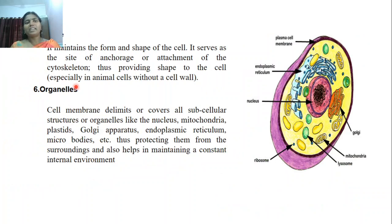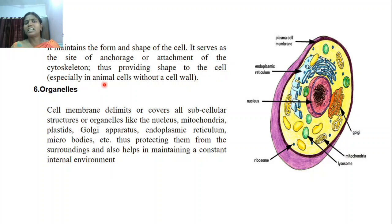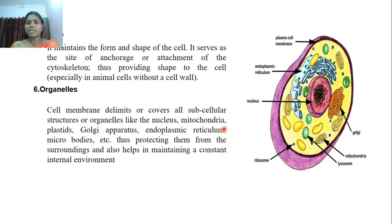The cell membrane provides a definite shape. It serves as a site of anchorage for the attachment of the cytoskeleton and provides a definite shape to the cells, especially in animal cells where they are without the cell wall. The cell membrane also delimits or covers all subcellular structures — organelles like nucleus, mitochondria, plastids, Golgi apparatus, endoplasmic reticulum, and microbodies.